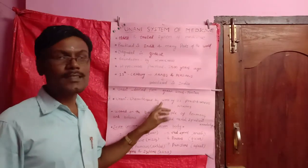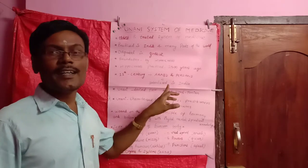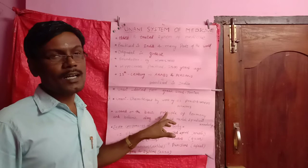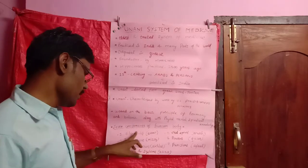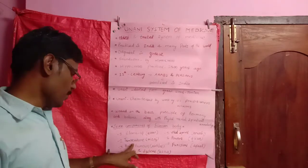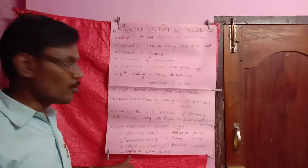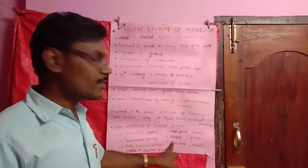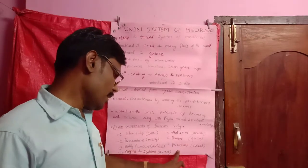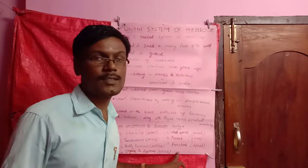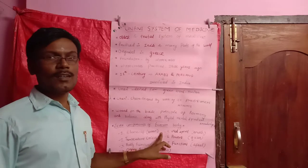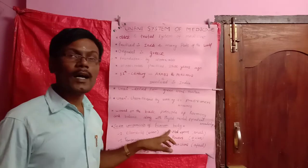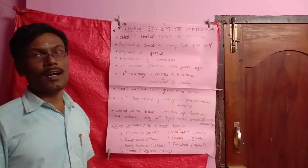According to the Unani System of Medicine, the human body is supposed to be made up of seven different components: the first is elements, second is temperature, third is bodily humors, fourth is organs and systems, fifth is vital spirit, sixth is power, and the seventh is functions. These seven components are named as Arcan, Vizor, Atlet, Aza, Arba, Gua, and Afal.